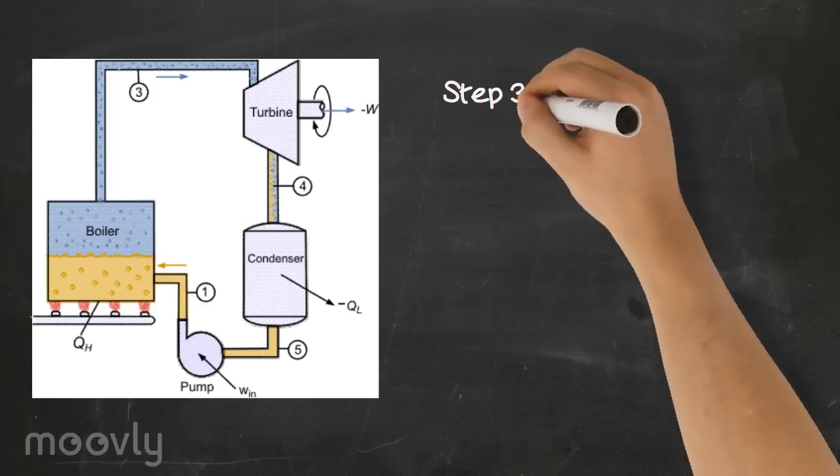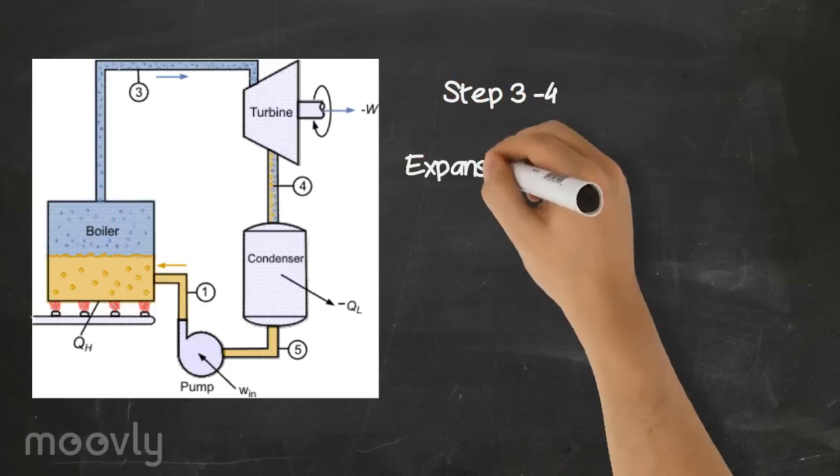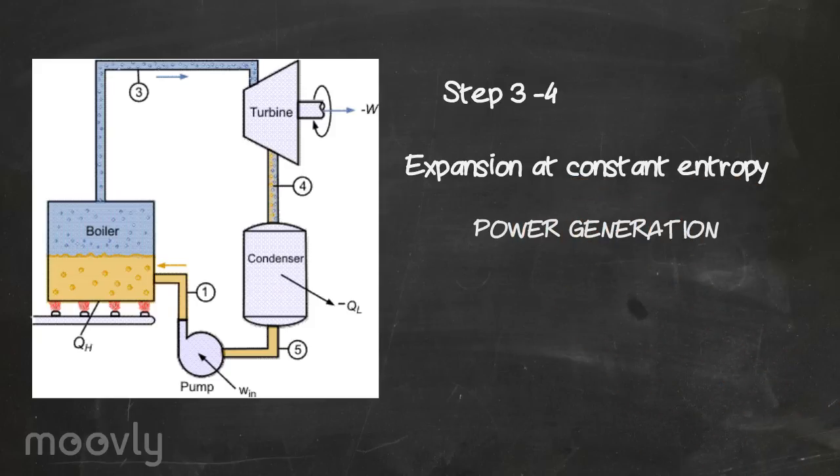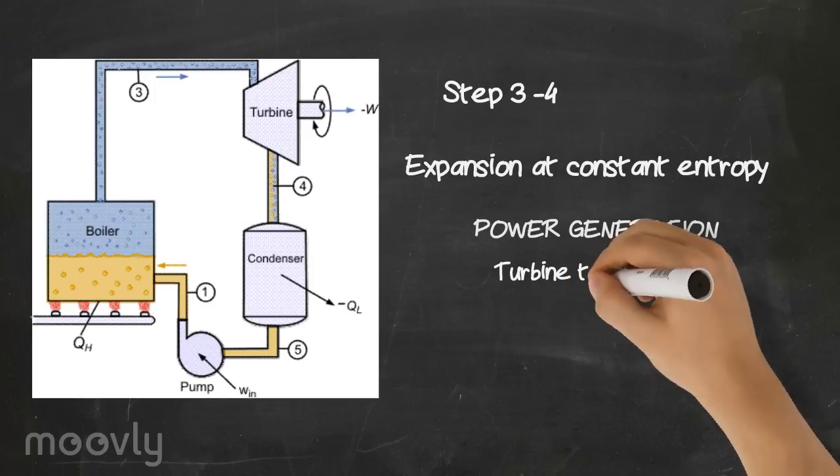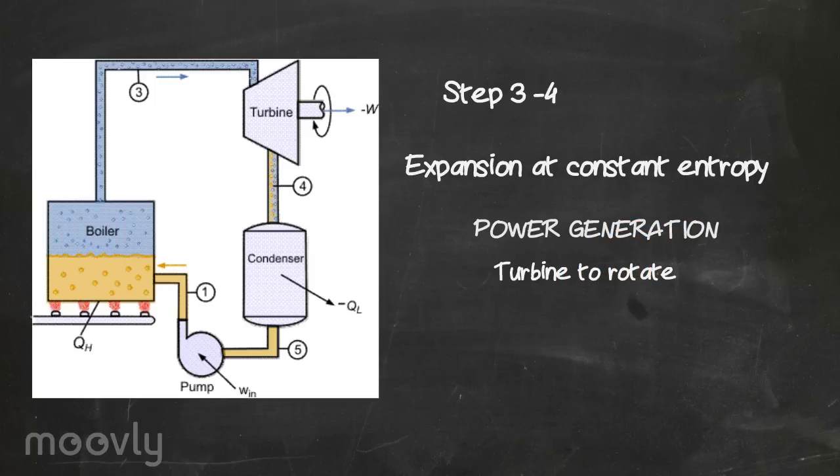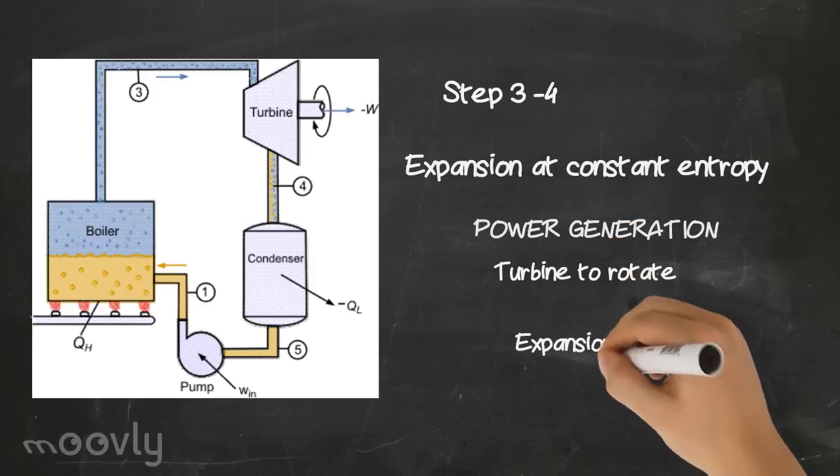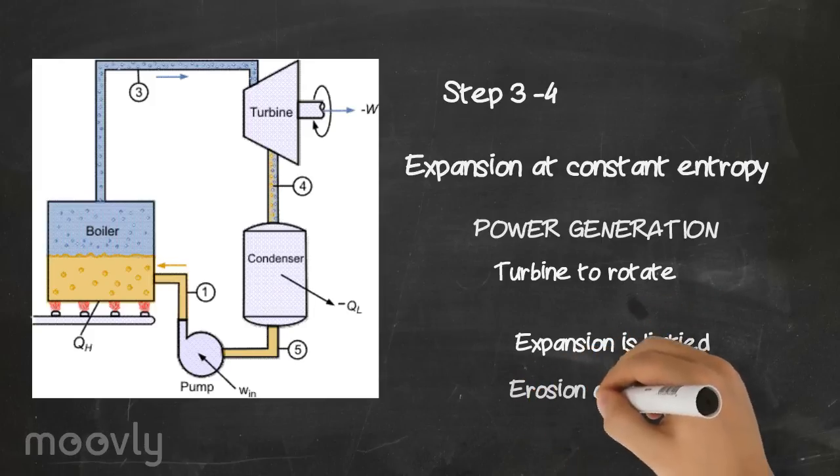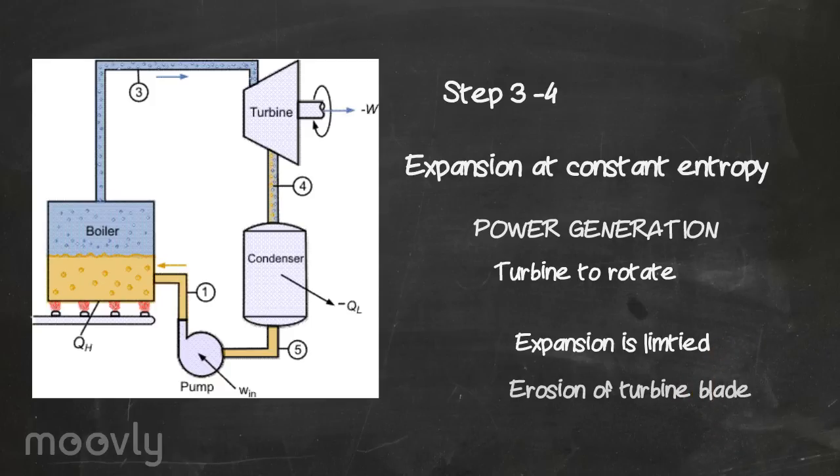Now, step 3 to 4, expansion occurs at constant entropy. This is the key step in power generation. The expansion of gas causes the turbine to rotate, thereby creating mechanical work from thermal energy. In practice, the expansion is limited by the temperature of the cooling medium and the erosion of the turbine blades. Exit vapor qualities should be greater than 90%. Note in the TS diagram, the entropy is constant.